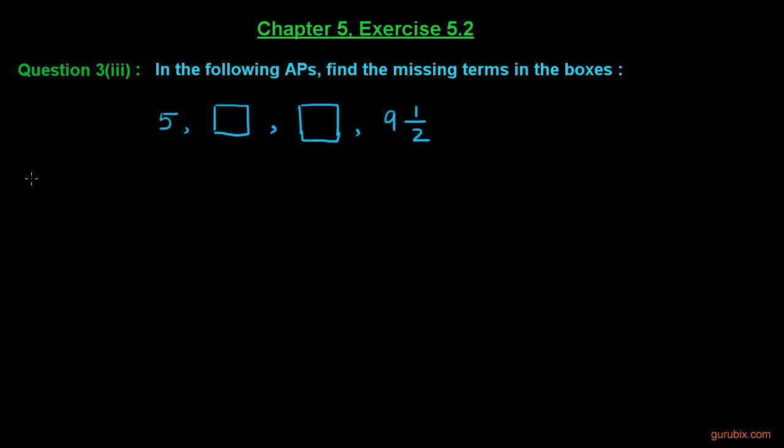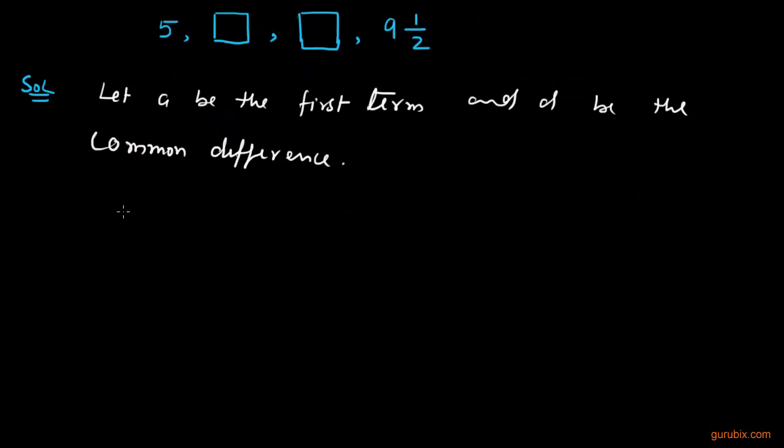So let us see how to solve this question. We observe that we are given the first term and fourth term. So first of all, let a be the first term and d be the common difference. We observe that a is equal to 5 and we are given the fourth term. This means this is equal to a plus 3d which is equal to 9½.